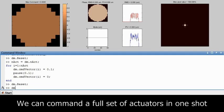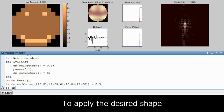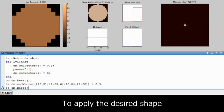Instead of actuating each actuator in turn we can also send a vector of commands. In this manner we can send whichever shape we choose.